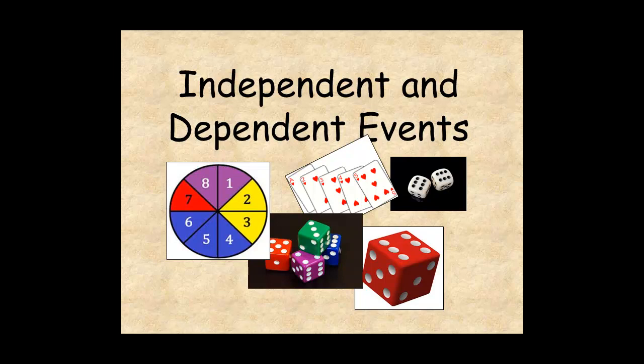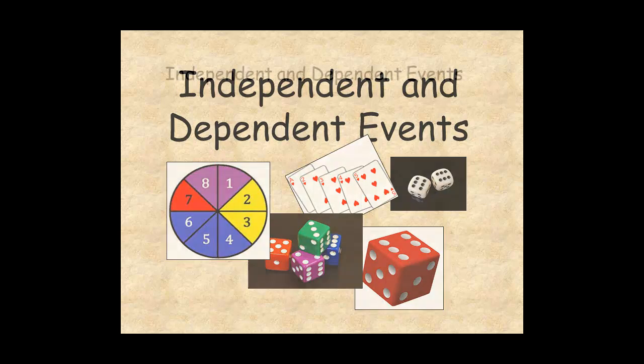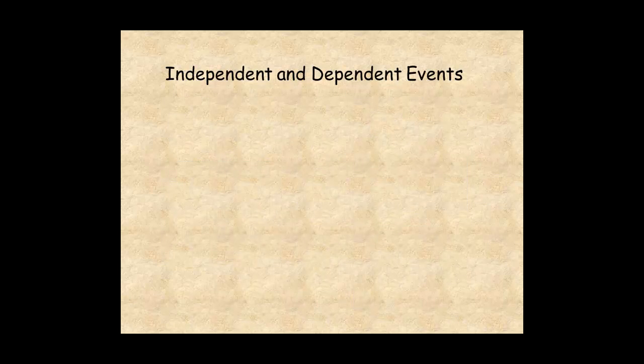This lesson shows you how to calculate the probability of independent and dependent events. When one event does not affect the outcome of the other, the events are independent.